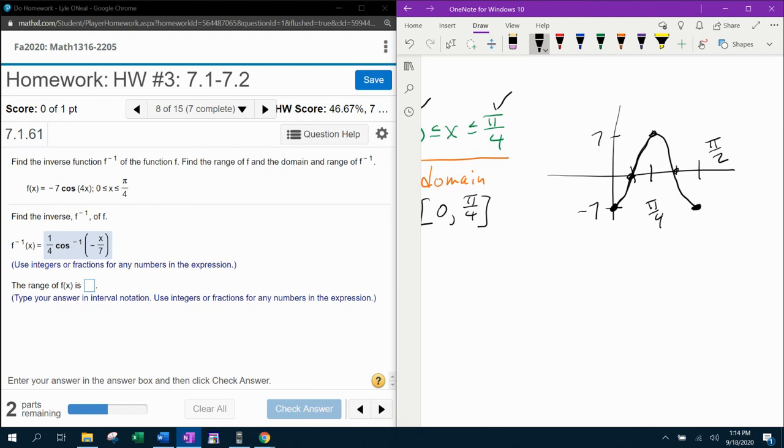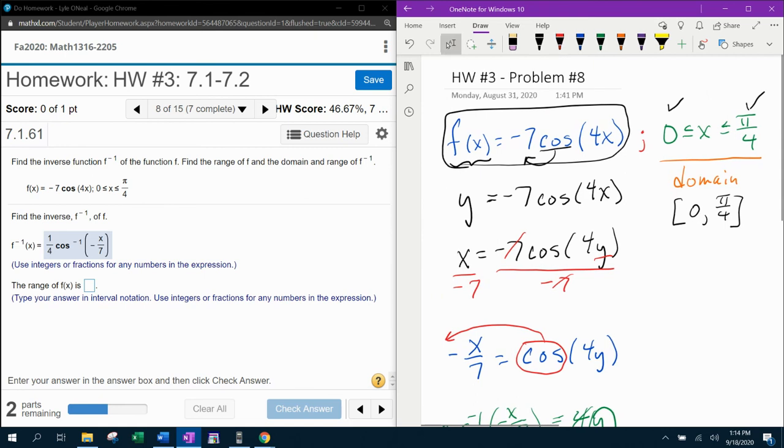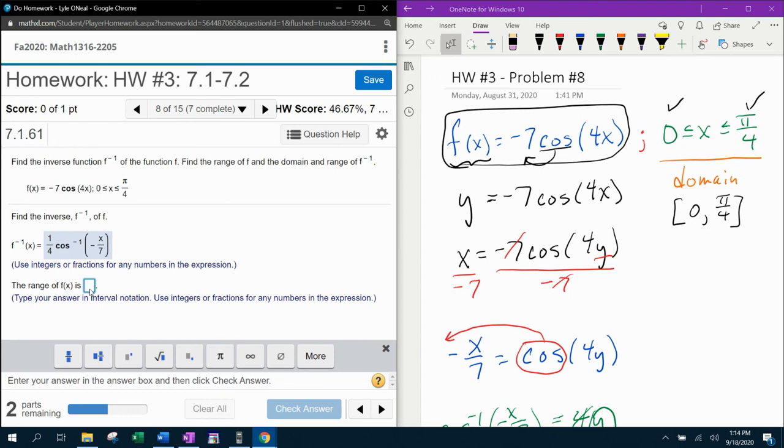But we're only going to pi over 4. So if we stop that right here, we can see that the maximum y value is going to be positive 7. So the range of f of the original function is everything from negative 7 to 7. And so that should be the range of our function with brackets negative 7 to 7. And that is using interval notation like it asked for.